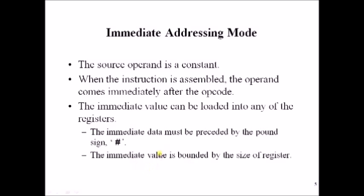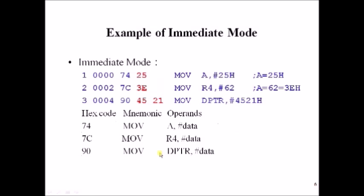Let us see some examples for immediate addressing mode. MOV A, #25 and MOV R4, #62 and MOV DPTR, #4521. These data values are preceded with a pound symbol. The assembler treats 25 as data, which will be stored inside the accumulator. R4 register is loaded with 62, and DPTR is loaded with 4521.